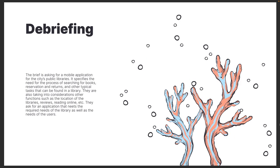The brief was asking for a mobile application for Valencia's public library, and it needed several processes such as searching for books, reservations, returns, and other typical tasks, as well as other functions such as the location of the libraries, reviews, and reading online, etc.